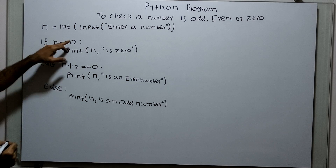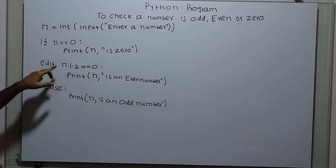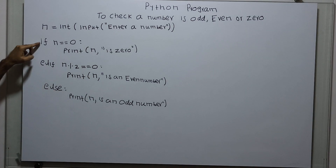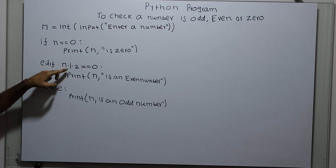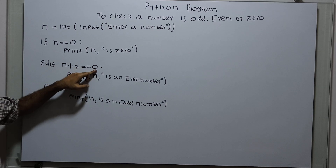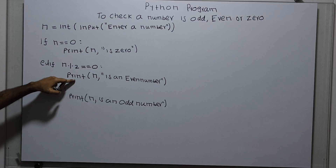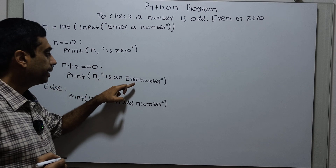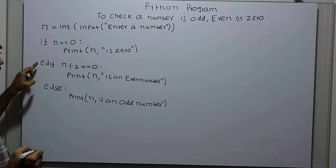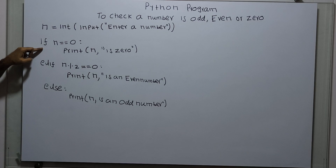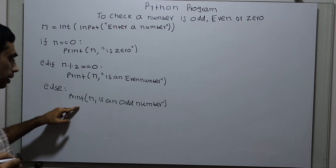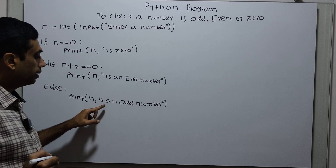The control will come here after the else. If this condition is false, then only elif n % 2 == 0 is checked. That means the remainder of n when divided by 2 is 0. If this condition is true, the print statement will get executed: n is an even number. After this, control will come out of the entire if/else. If elif is also false, then only the control will come to the else and execute the print statement in the else block.